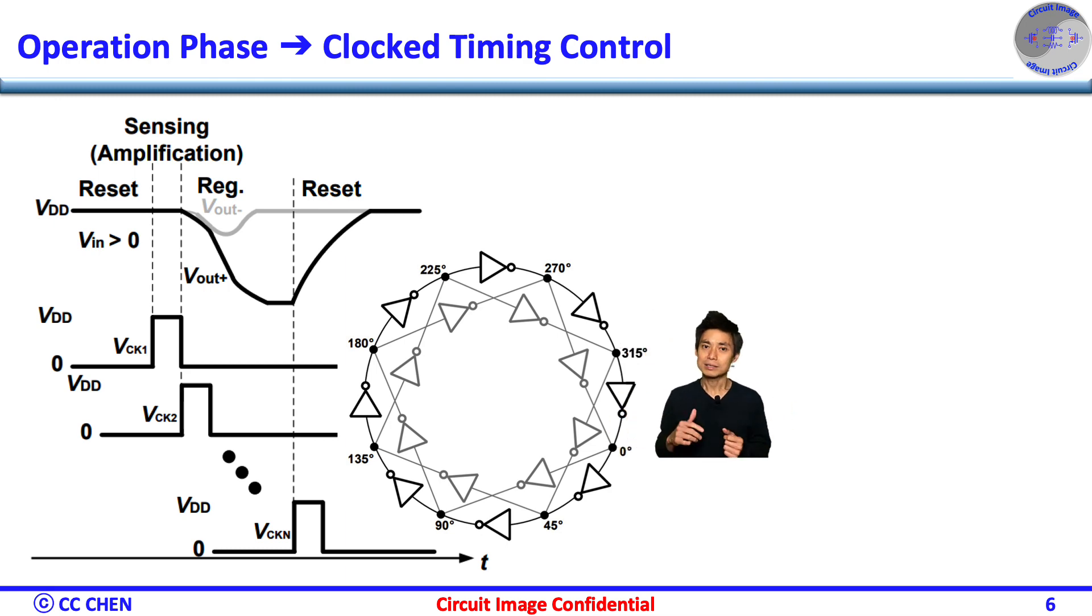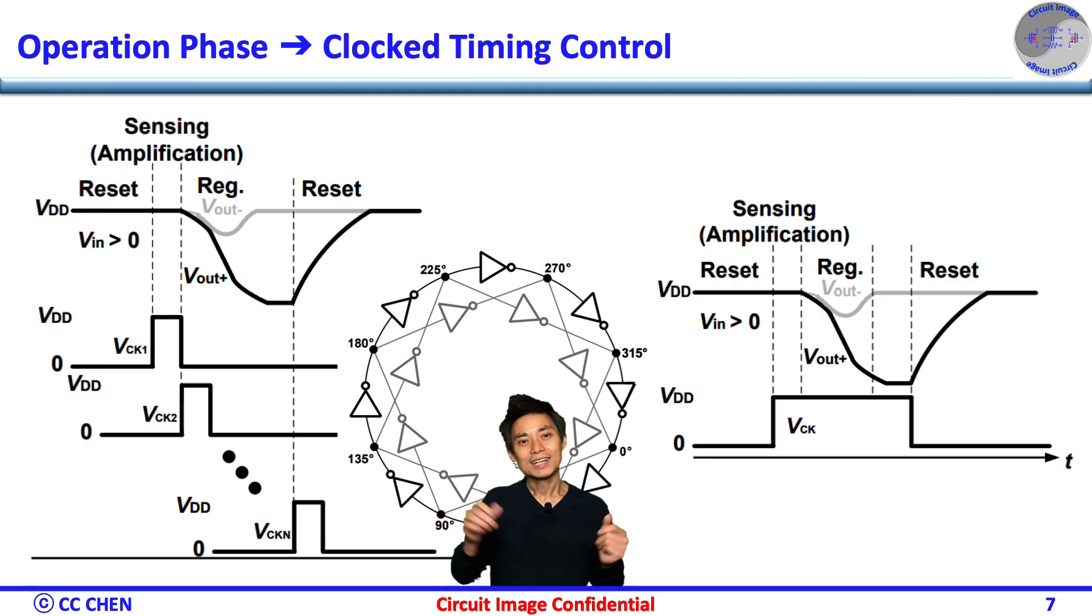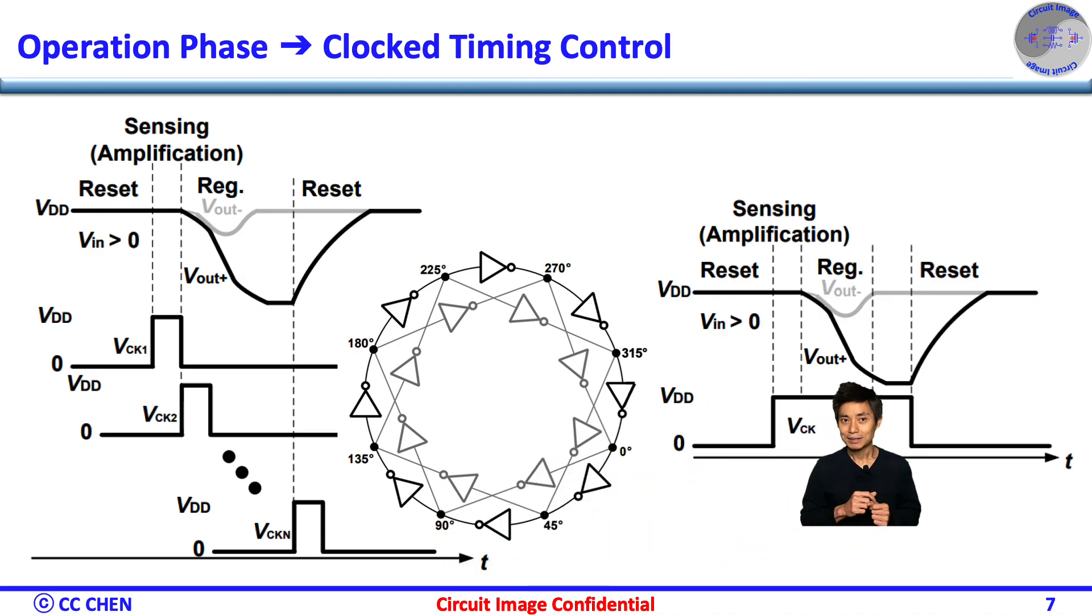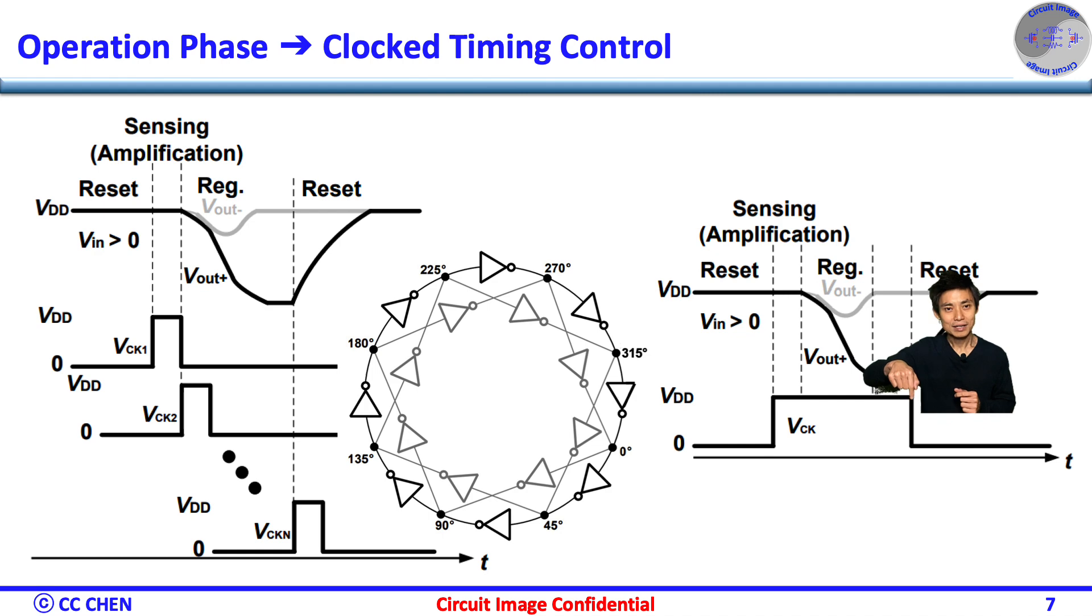What's the simplest clocking you could have, but more than one phase? Correct, single phase clock, but having two control phases by the rising edge and falling edge phases.